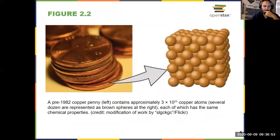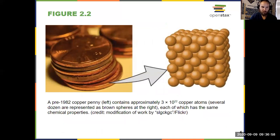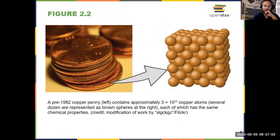If we look at copper, for example — looking at early pennies, because modern pennies are copper-coated zinc, but early pennies were pure copper — if we look at that at the atomic scale, it's just copper atoms, ignoring any impurities that might be in there.